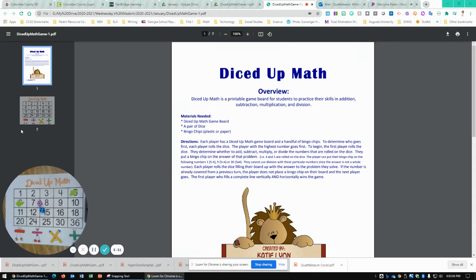So each player's going to roll the dice, filling their board out with the answers to the problem. If the number is already covered from a previous turn, then that player does not place a bingo chip on their board, and the next player goes.